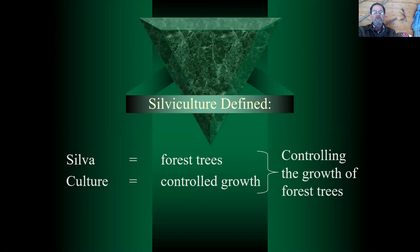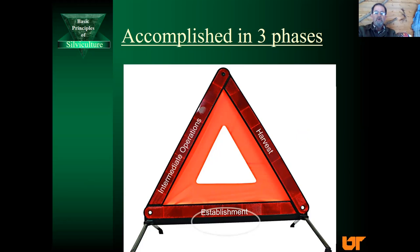Silviculture is accomplished in three different phases. We have the establishment phase — getting the forest started. There are the intermediate operations — what do we do to the forest while it is developing. And then the final stage, which I refer to as harvest, is actually a regeneration stage. Eventually we'll get to all three of these legs of the triangle, but today we're going to be focusing on the establishment stage.